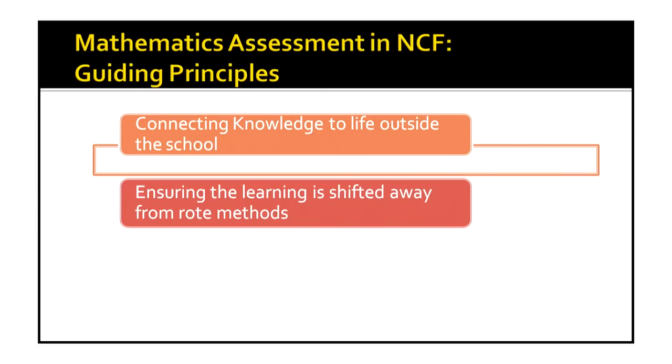The next principle says that learning should be shifted away from rote methods. The student should not only be able to cram and reproduce a formula when asked, but should actually be able to apply it in different related situations. For example, what if a student knows the formula for profit and loss or profit percentage, but when given a situation, is not able to find the solution using that formula? This reflects rote learning. So learning is to be shifted from rote methods to real-life application of concepts, and this should be reflected in the assessment of mathematics learning.